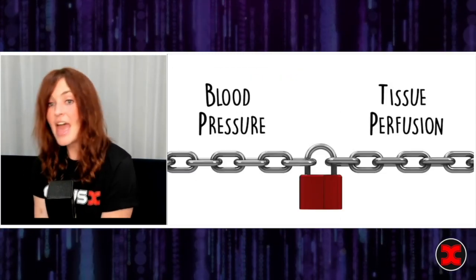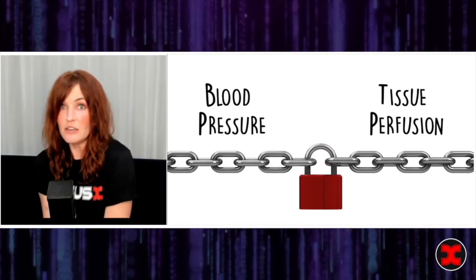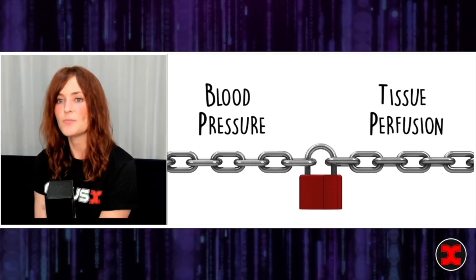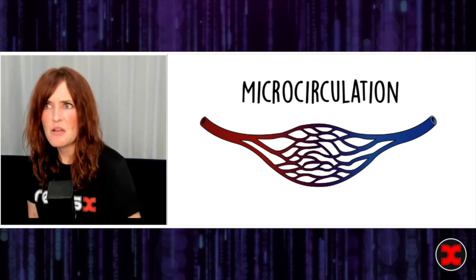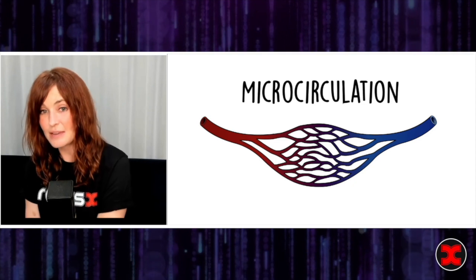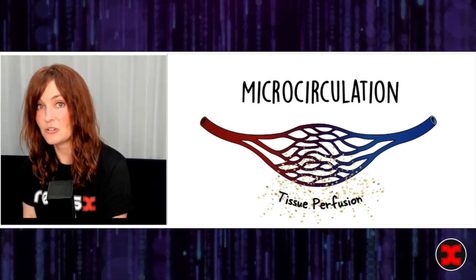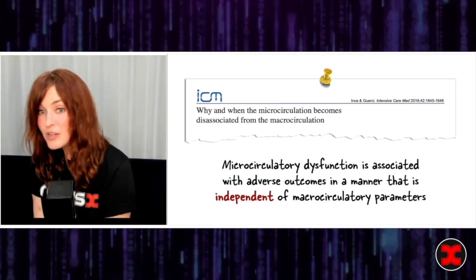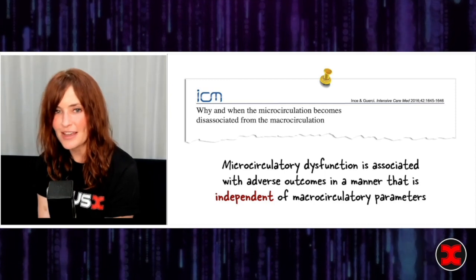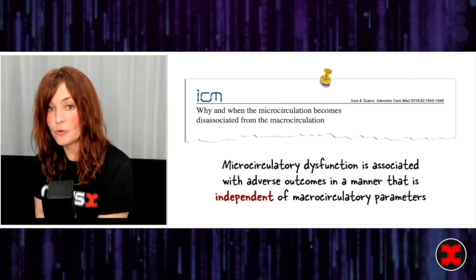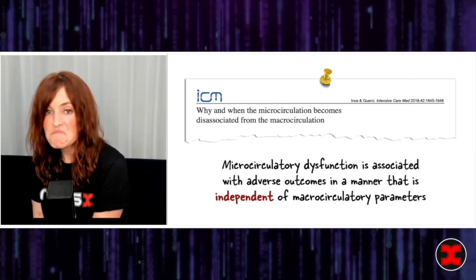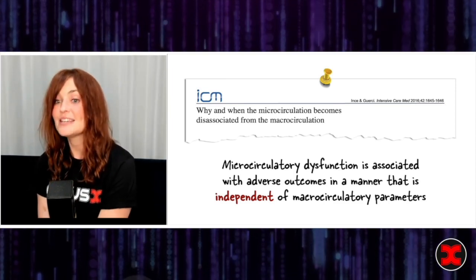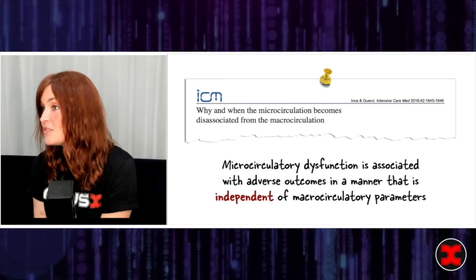You've got to get this straight in your head: shock is not about hypotension, shock is about hypoperfusion. Blood pressure and tissue perfusion are not linked in lockstep. What's really important is less the macrocirculation — less the blood pressure, heart rate, and cardiac output. What we really care about, where the magic happens, is in the microcirculation. It seems increasingly clear that microcirculation and macrocirculation don't always march together — microcirculatory dysfunction can be associated with adverse patient outcomes independently of macrocirculatory parameters.